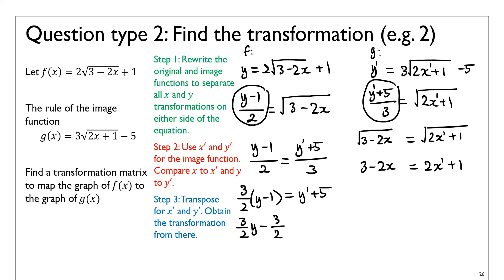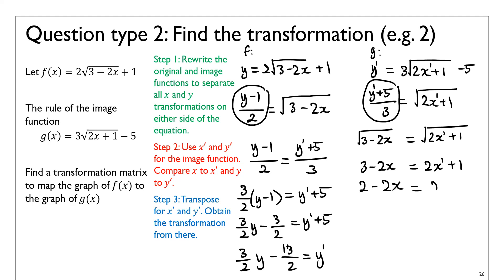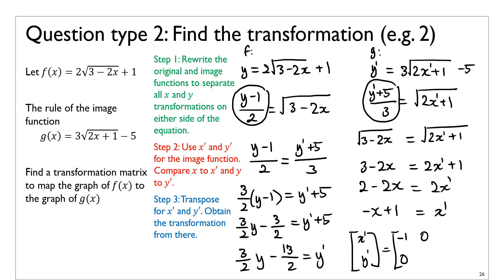Expanding and moving the 5 gives y′ = (3/2)y − 13/2. For x, starting from 3 − 2x = 2x′ + 1: move the 1 to get 2 − 2x = 2x′, then divide by 2, giving x′ = −x + 1. So this is your y-transformation and this is your x-transformation. From these expressions you should be able to draw a transformation matrix: there's no x-dilation, but there is a reflection in the y-axis, a y-dilation of 3/2, and translations of +1 and −13/2.